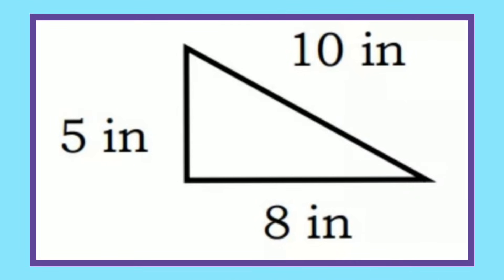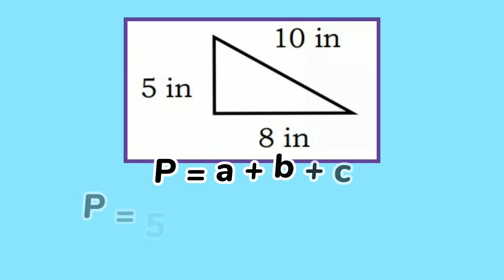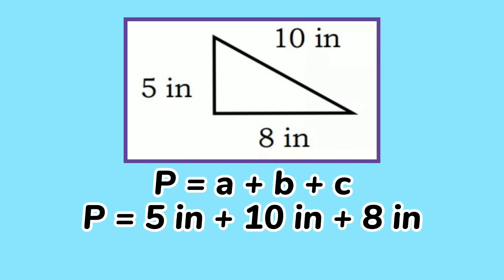How about this figure? Since this scalene triangle has only 3 sides, let's add them all. So P equals 5 plus 5 plus 10 plus 8, which gives you 23 inches.